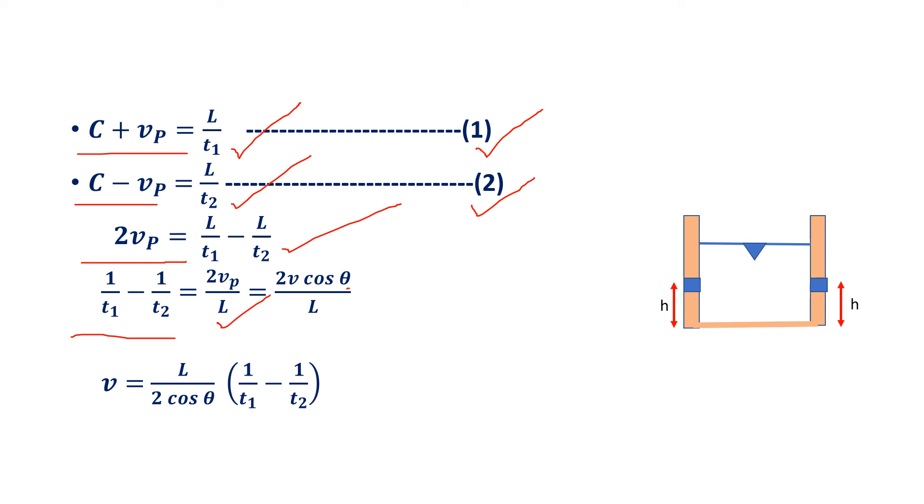Here Vp is written as V cos theta. So it will become twice of V cos theta divided by L. Now we can get V as L divided by 2 cos theta multiplied by 1 by T1 minus 1 by T2.